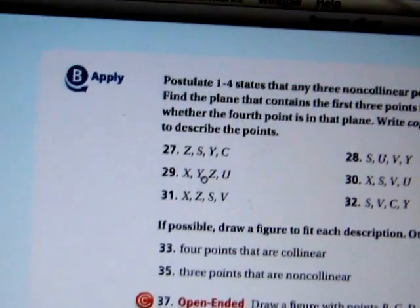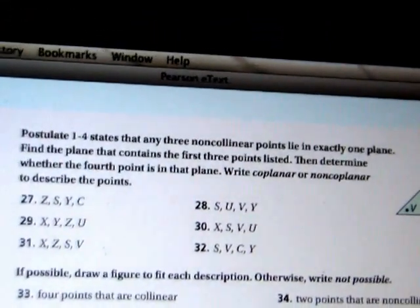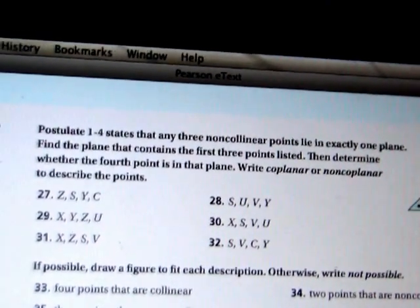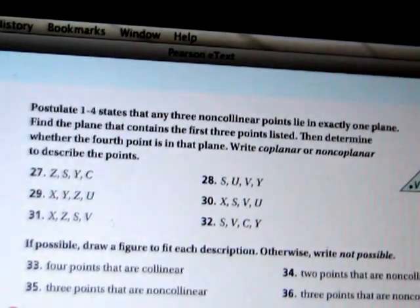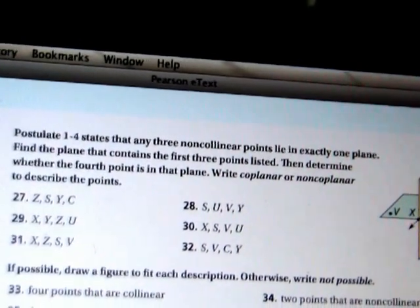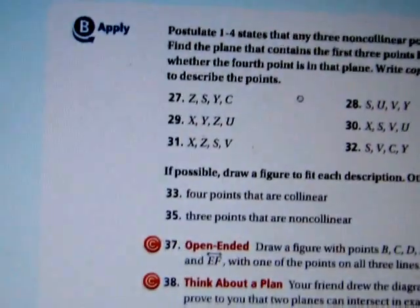29. We'll look at X, Y, Z, and then U. Here's X, here's Y, here's Z. X, Y, and Z are all part of this plane right here. So the question is, is U on that plane? U is over here. It is not part of this plane. So X, Y, Z, and U are non-coplanar. The word is right there, non-coplanar.